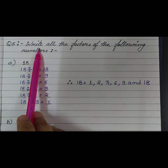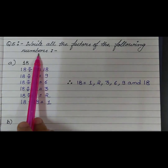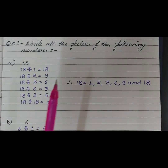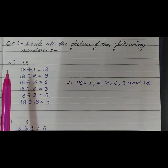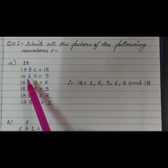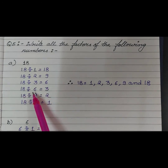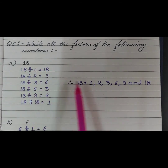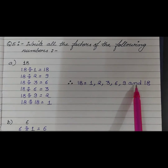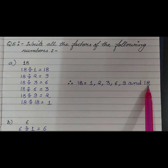Question number 5: Write all the factors of the following numbers. A factor of a number is an exact divisor of that number. Part A: 18. Factors of 18: 18÷1=18, 18÷2=9, 18÷3=6, 18÷6=3, 18÷9=2, 18÷18=1. Therefore the factors of 18 are 1, 2, 3, 6, 9, and 18. We cannot go beyond 18 because factors are finite.